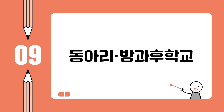Unit 9. We have a club day once a month. We do club activities during the 6th and 7th period. Which club will you join? Which club are you in? I'm going to join the basketball club. I'm in the computer club.